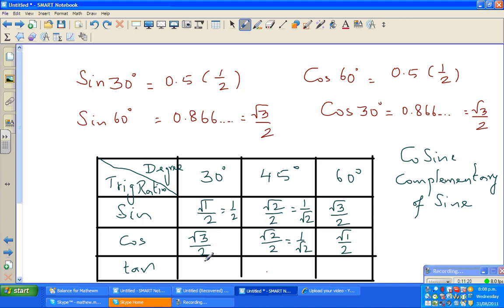Tan is sine over cos. So if you take, if you divide this by this, you'll get 1/√3. And if you divide this and this, you'll get 1.